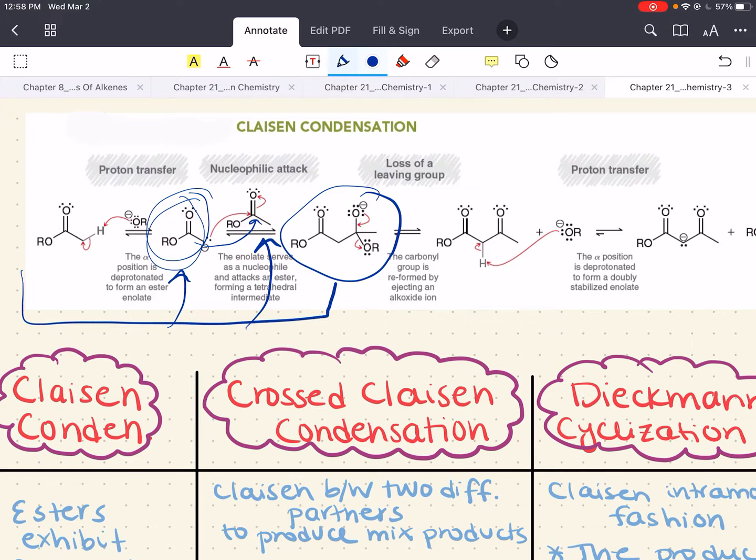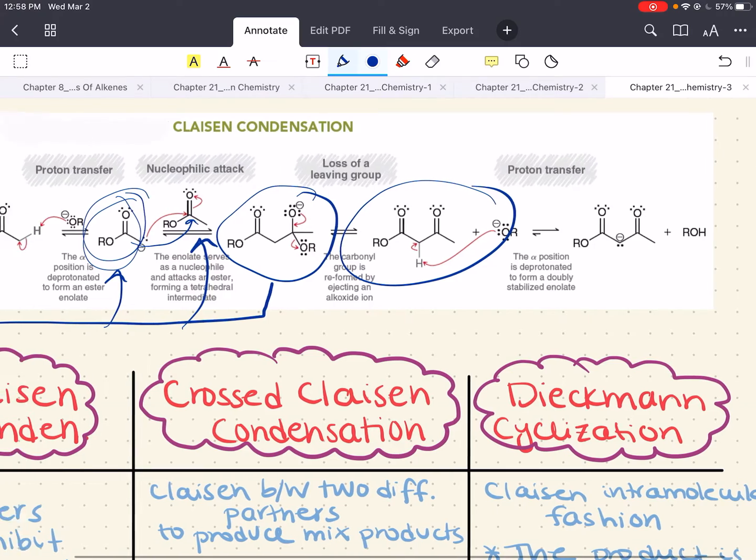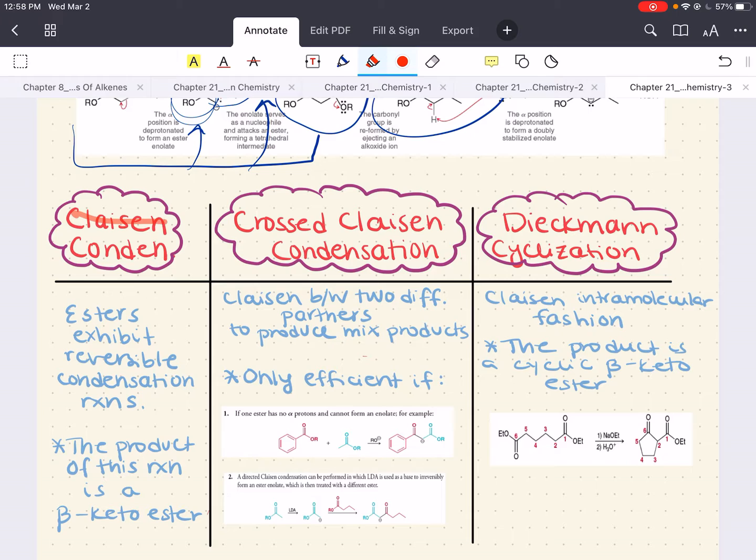The product at the end of all this is your beta-keto ester. Now, there are two important things to keep in mind in regards to Claisen condensation reactions. First, Claisen condensation reaction requires that your starting ester must have two hydrogens at your alpha position. With just one alpha hydrogen, you lose the driving force for your condensation reaction.